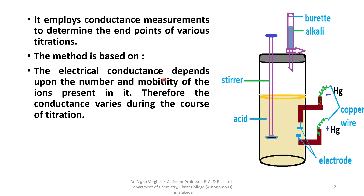When the conductance is plotted against the titrant volume, the end point is generally given by the point of intersection between the two linear portions of a curve.